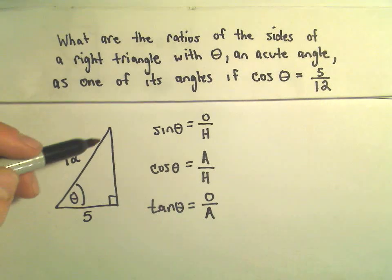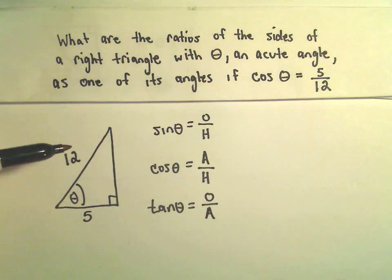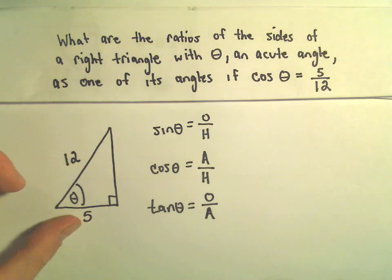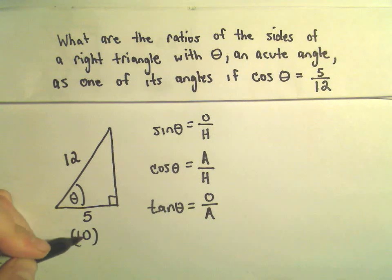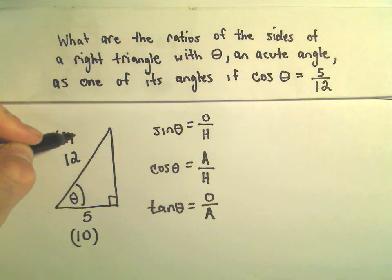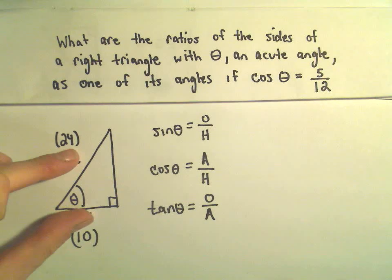One thing that's important, there's no guaranteeing that the original triangle this came from actually had an adjacent side of length 5 and a hypotenuse of length 12. This could have been length 10 instead of 5, and this could have been length 24 instead of 12. I'm just doubling them. The idea is, though, cosine of theta would be 10 over 24, which still would reduce to 5 over 12.